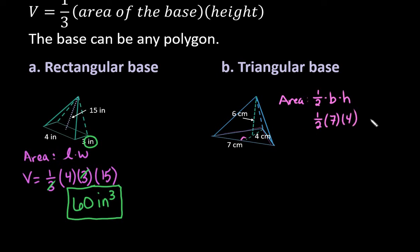So we would set this up as one-half times seven times four. And if you want to, you can always find this first. So if you wanted to, we could do four divided by two would be two. And then two times seven would give me 14.